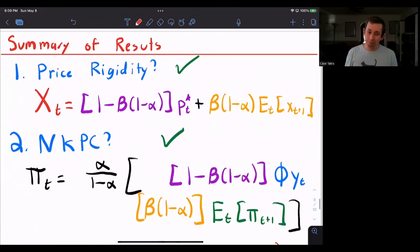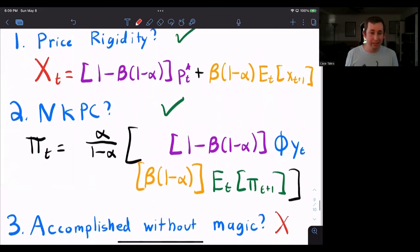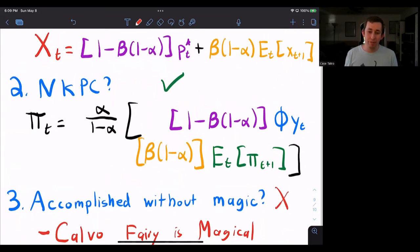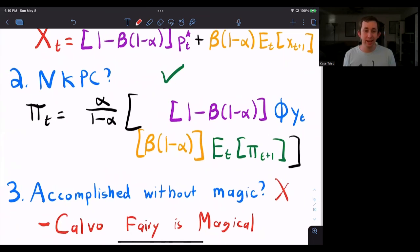So let's think about the summary results here. Do we have price rigidity? We absolutely do because we don't have the optimal price. We have some function of the optimal price. Do we have a new Keynesian Phillips curve or an expectations augmenting Phillips curve? Absolutely. We have some function of the output gap today and the expected value of future inflation.